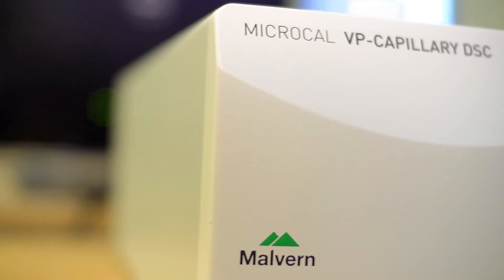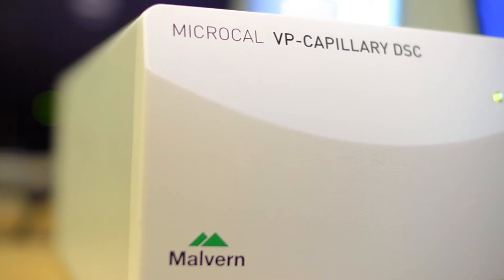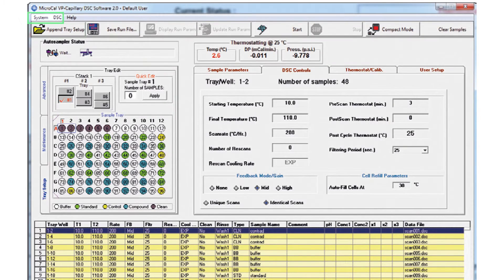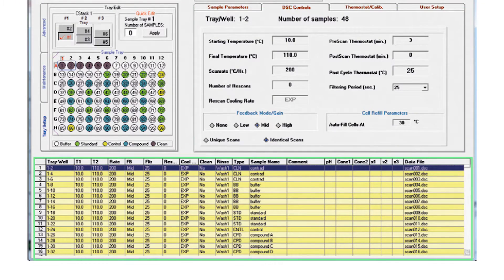The high-throughput, high-sensitivity MicroCal VP Capillary DSC system features software that streamlines workflow through simplified experiment setup and flexible instrument scheduling. Automated data analysis and improved data sorting help relieve analysis bottlenecks, reducing data analysis time for a typical experiment from days to hours.